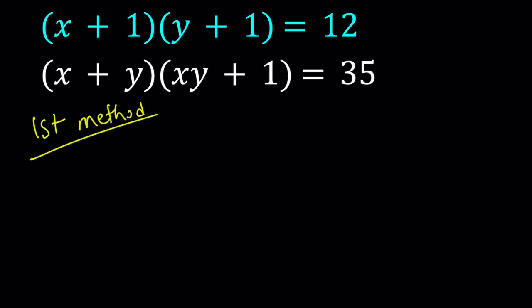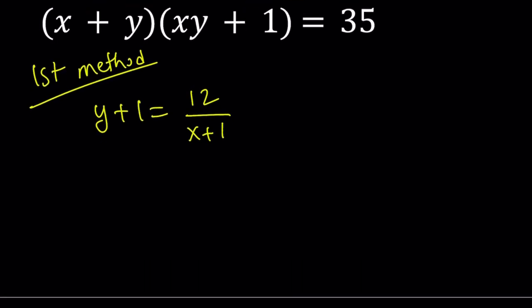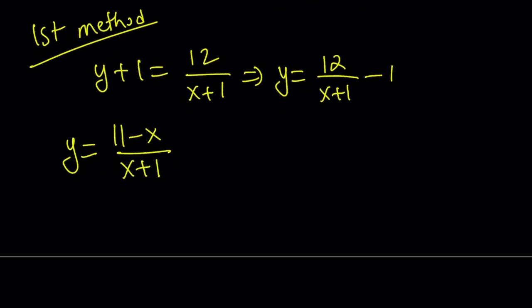So let's go ahead and write this as y plus 1 equals 12 divided by x plus 1. Obviously, x cannot be negative 1 because that wouldn't be a solution. And let's subtract 1 from both sides. That gives us y equals 12 over x plus 1 minus 1. And after making a common denominator, we get 12 minus x minus 1, which is 11 minus x divided by x plus 1 for the y value.